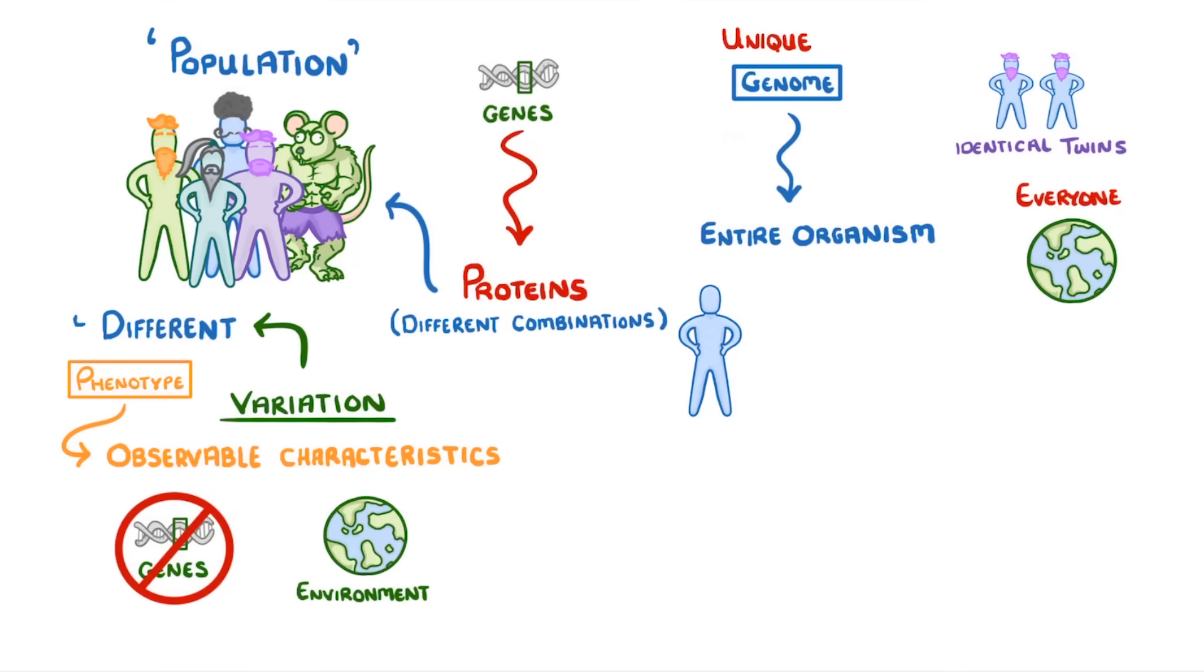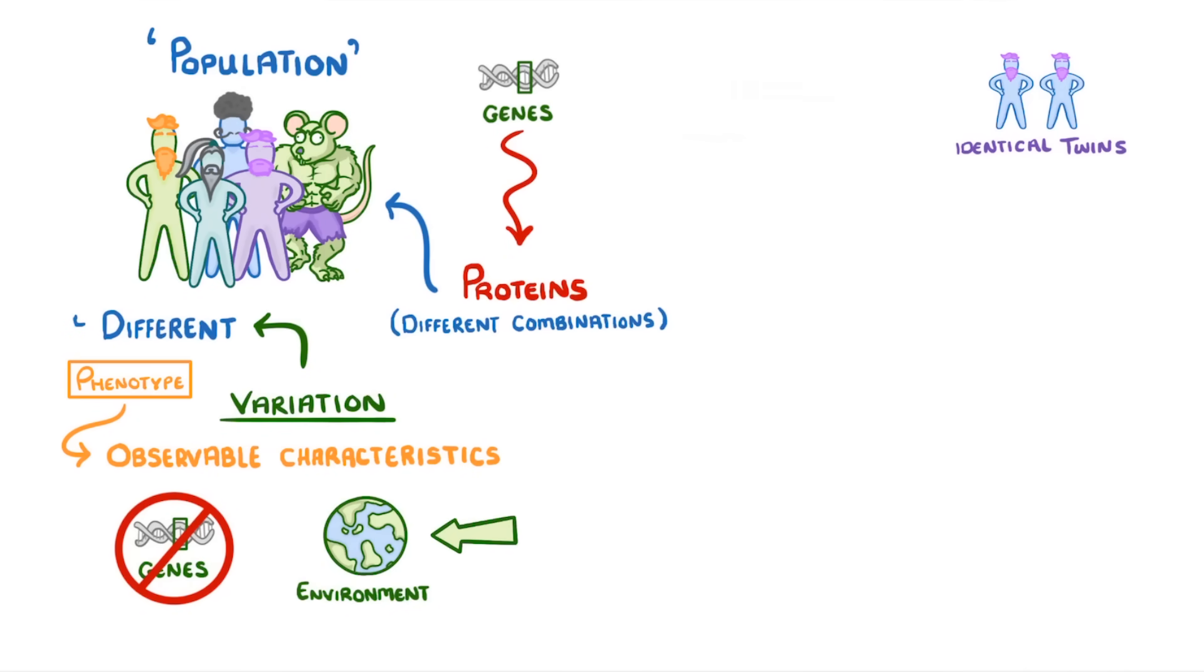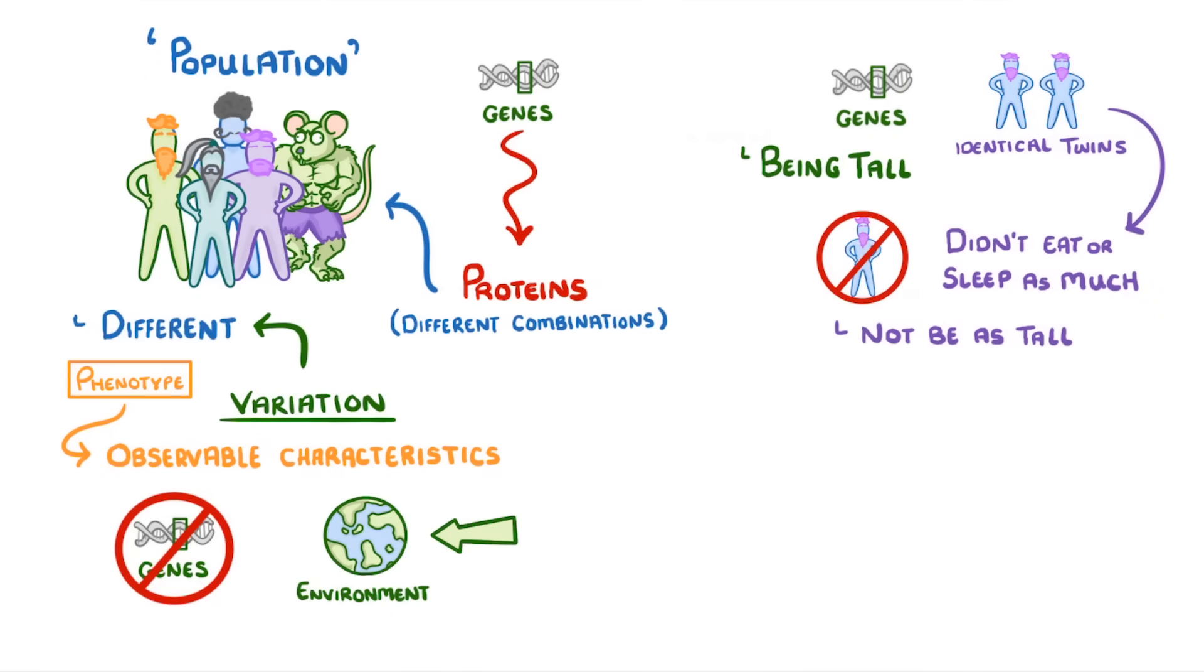For example, a pair of identical twins may have the same genes for being tall, but if one of them didn't eat or sleep as much as the other, then they might not be as tall. Or if one of them spent more time in the sun than the other, then their skin would be darker.